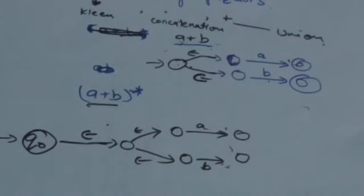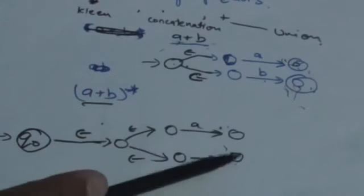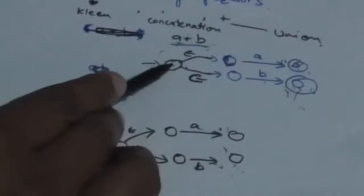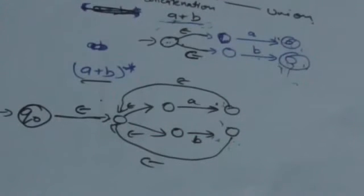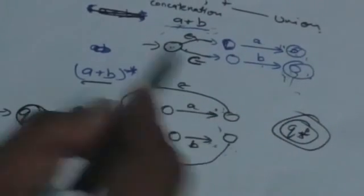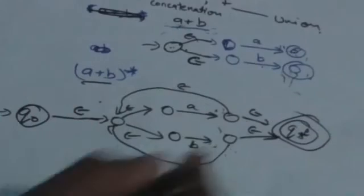From the final states of the finite automaton corresponding to a plus b, which are now non-final, add empty transitions to the initial state of this newly formed automaton. Then make a final state QF, and from the final states of the automaton corresponding to a plus b add empty transitions to this new final state QF. From the new initial state, add an empty transition to the new final state QF.